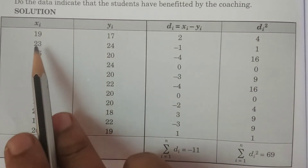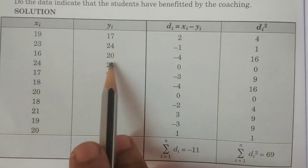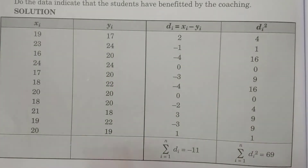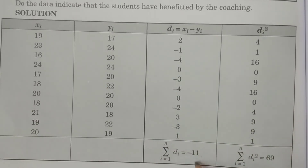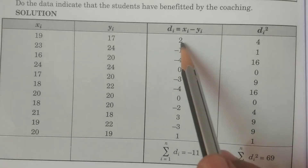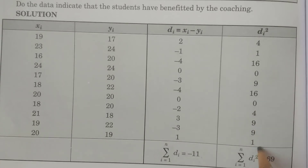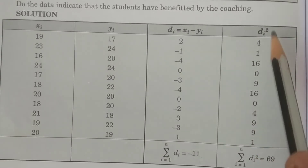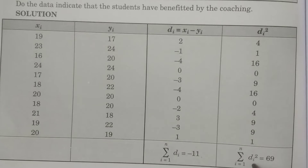For xᵢ − yᵢ: 19 − 17 = 2; 23 − 24 = −1; 16 − 20 = −4, and so on. Calculate all values of dᵢ. Then add all dᵢ values to get Σdᵢ = −11. For dᵢ²: 2² = 4, (−1)² = 1, (−4)² = 16, etc. Calculate all dᵢ² values and their summation Σdᵢ² = 69.